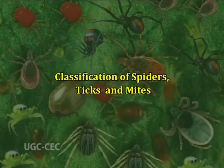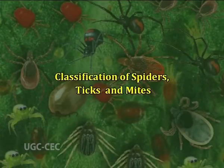The Arachnida is a varied assemblage of arthropods. Arachnida forms the larger and the more successful class of the subphylum Chelicerata. First we will see classification of spiders, ticks and mites.